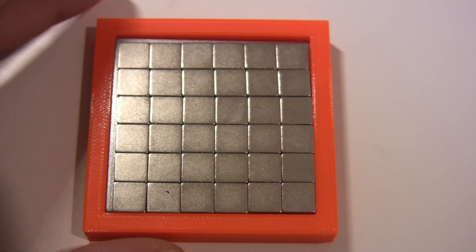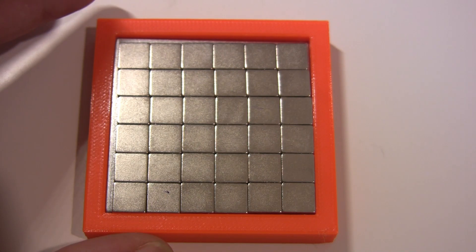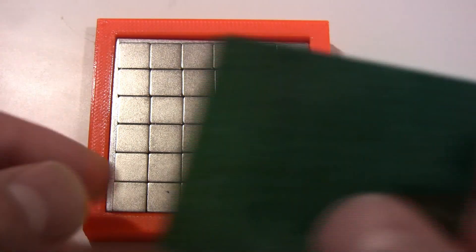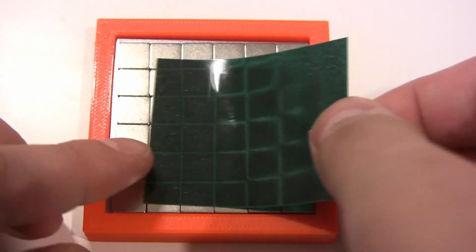So we're going to take our magnetic viewing film, which we looked at in another video—I'll put the link in the description—and we're going to place it over our array of magnets.